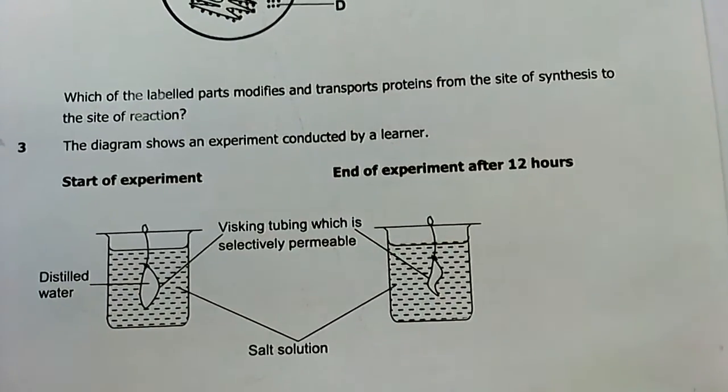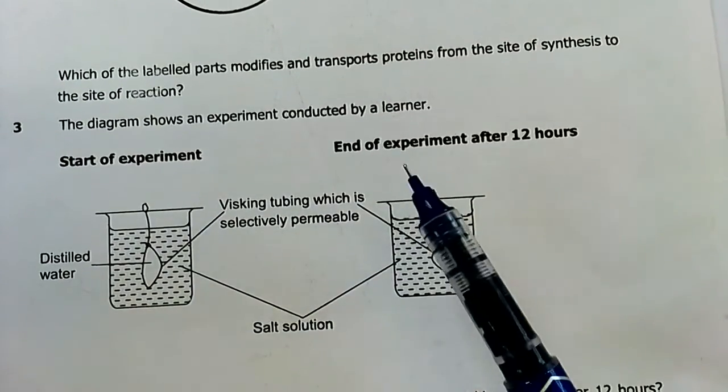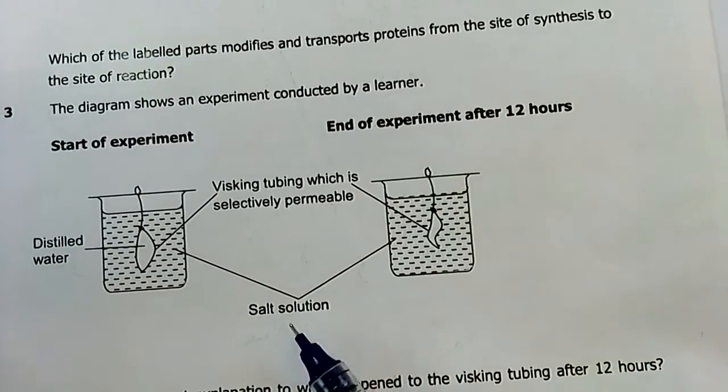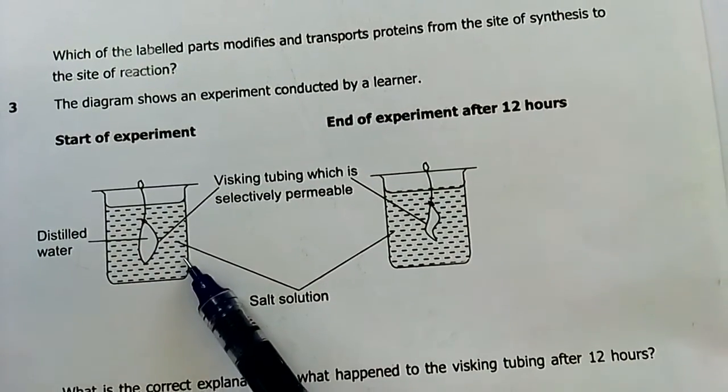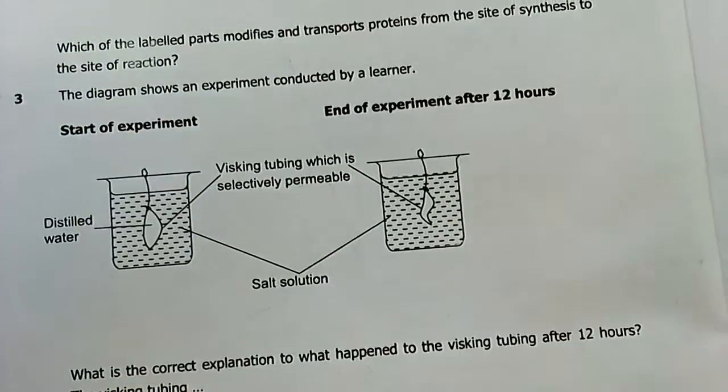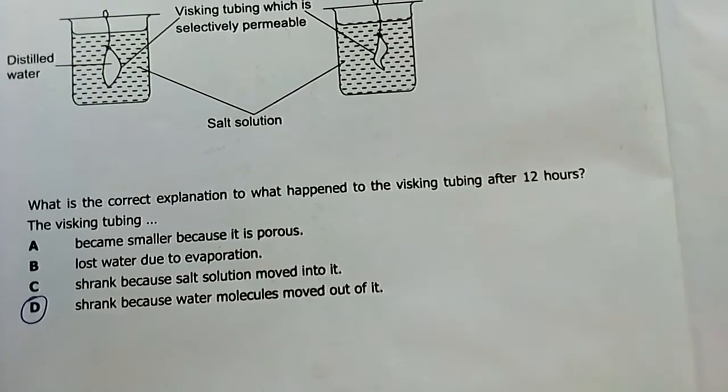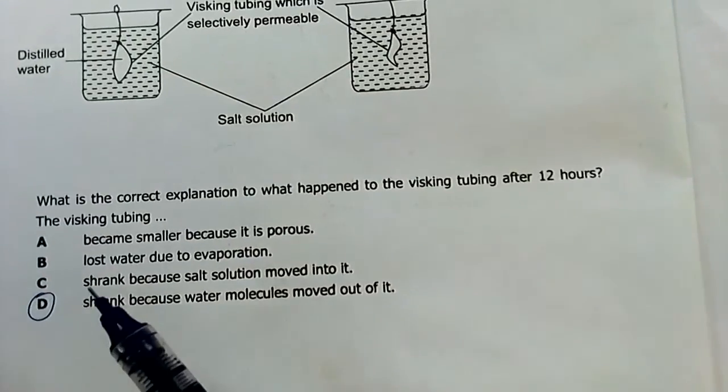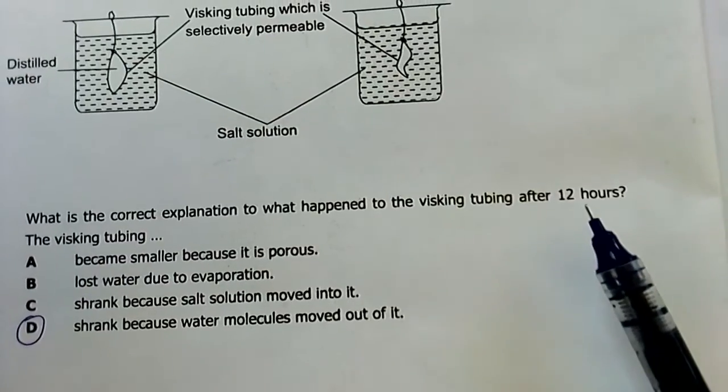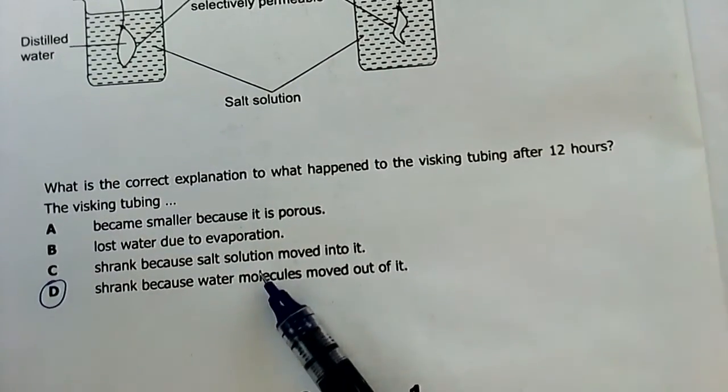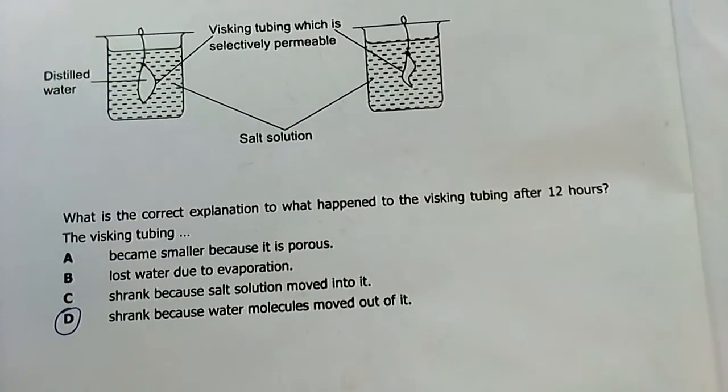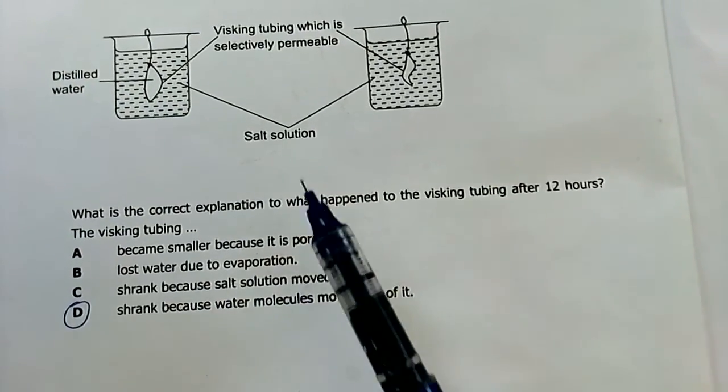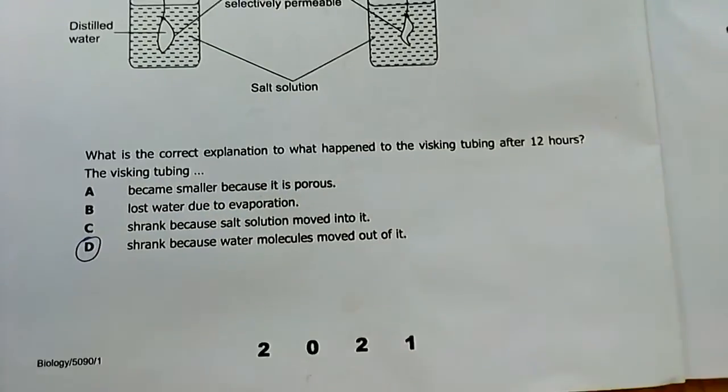Number three: the diagram shows an experiment conducted by a learner, start and end of experiment after 12 hours. I've got distilled water, visking tubing which is selectively permeable like a cell membrane, then salt solution. There's pure water which is distilled water, then salt solution with solutes in it. During osmosis, water moves from a region where it is high in concentration to a region where it is low in concentration, so I expect it to move out of this by osmosis. The visking tubing shrunk because water molecules moved out of it by osmosis. That's the only correct answer.